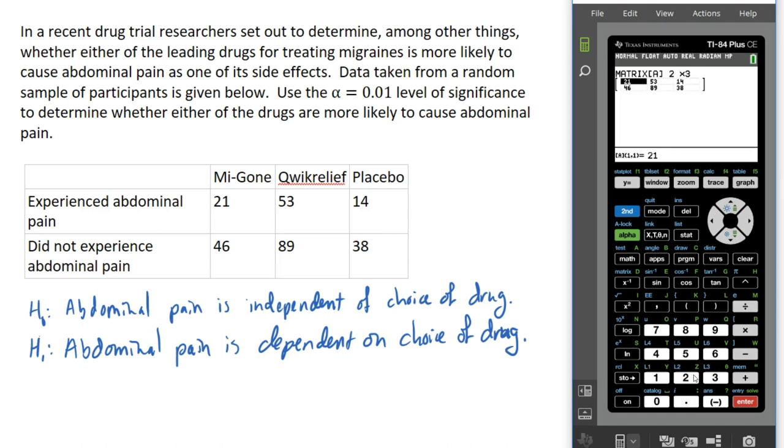And once I fill these in, I'm going to go to STAT. I'm going to go over to TESTS. And I'm going to go down to the CHI-square test, which again is CHOICE CAPITAL-C. And I want this to look the same. I put my observed data in matrix A again. If you put it somewhere else, change that. I want it to put the expected values in matrix B. There's nothing wrong with that. And I'm going to go down to CALCULATE.